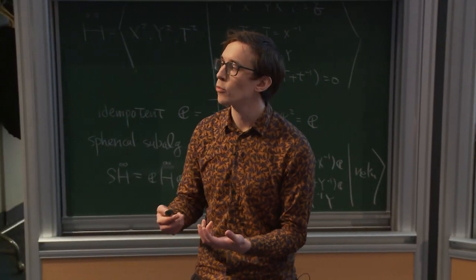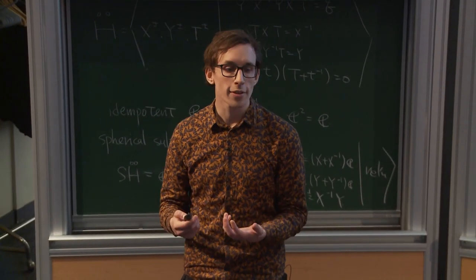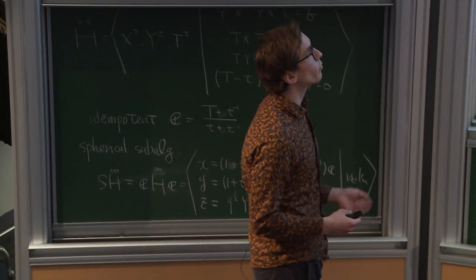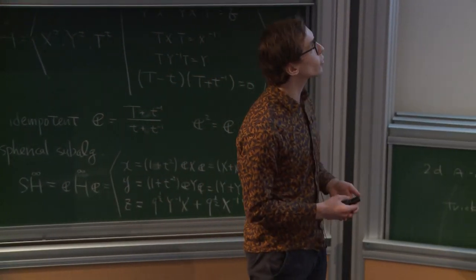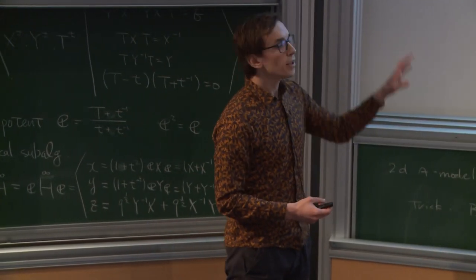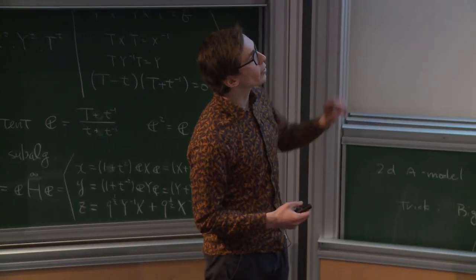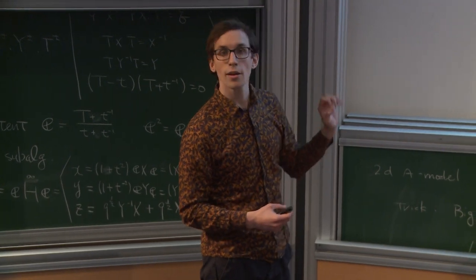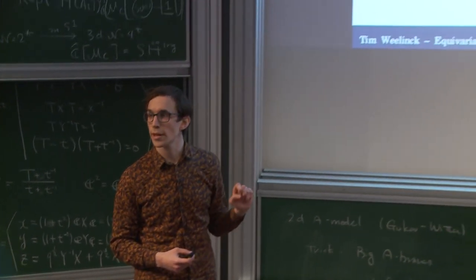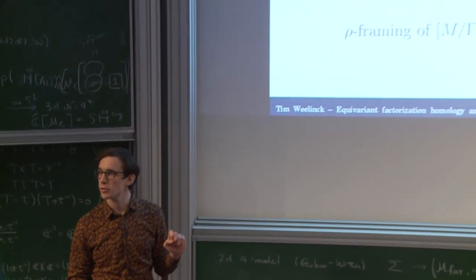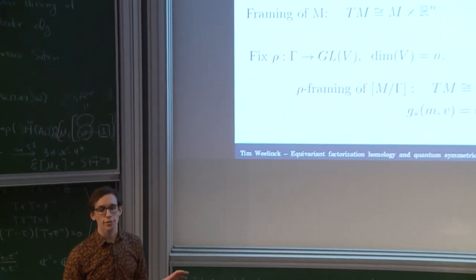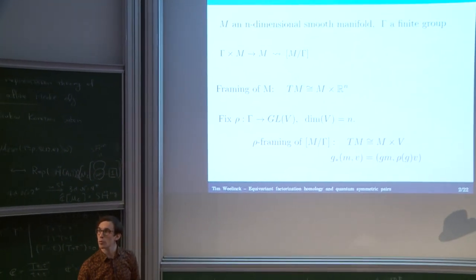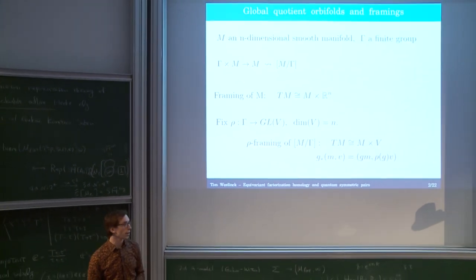Equivariant with respect to what? We need to fix some representation of the group gamma such that we can trivialize the tangent bundle equivariantly with respect to that given representation. That's what I'll call a rho-framed global quotient.